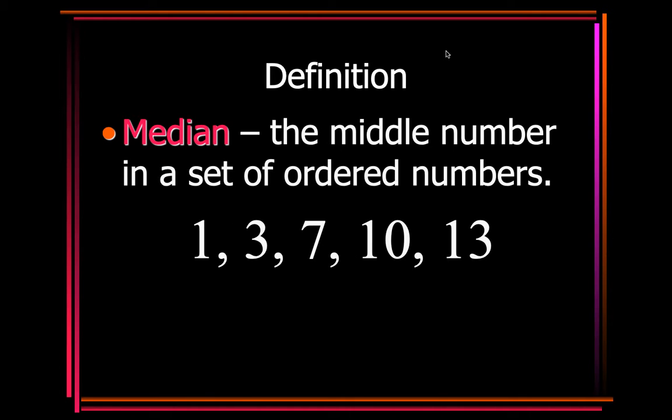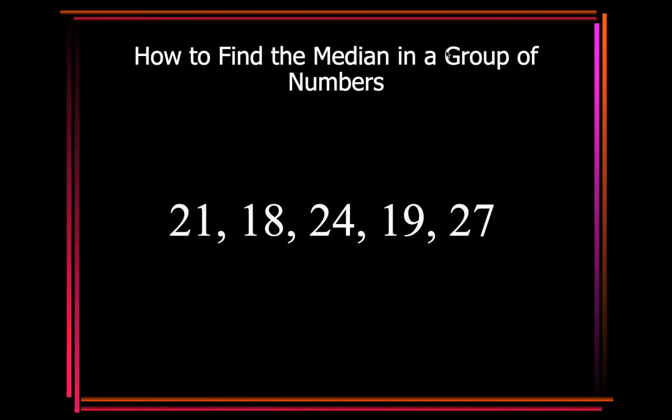So again, it's the number in the middle of a set of ordered numbers, and 7 would be the middle. So remember the notes. It says you cross off the 1, then the 13, the 3, then the 10, and that leaves you with 7.